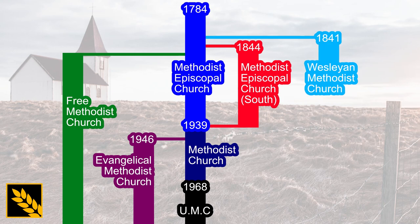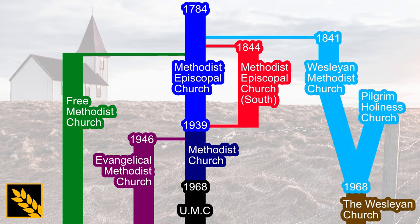In 1841, a denomination called the Wesleyan Methodist Church had left the Methodist Episcopal Church over slavery, church government, and holiness. They merged with the Pilgrim Holiness Church in 1968 to form the Wesleyan Church, and at the merger, the Bible Methodist Connection of Churches exited over issues like desiring lesser central control over the congregations.